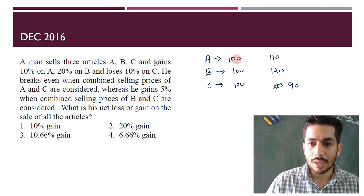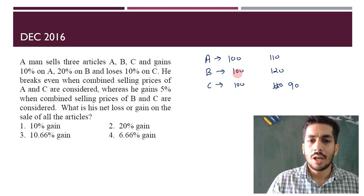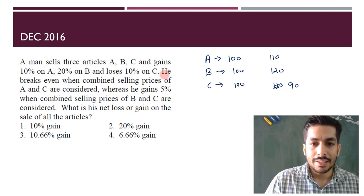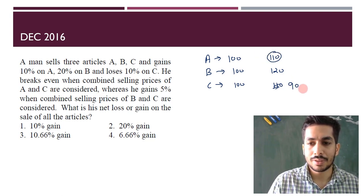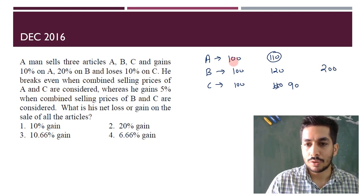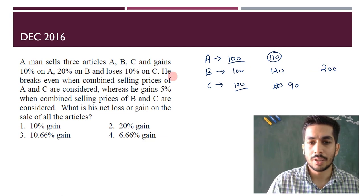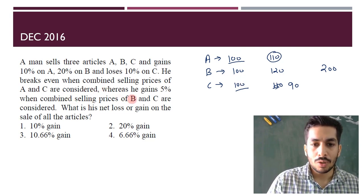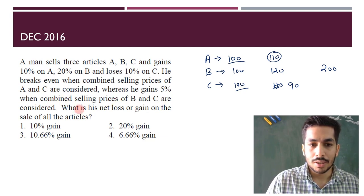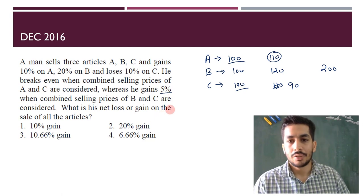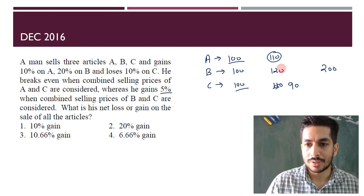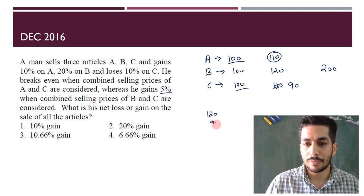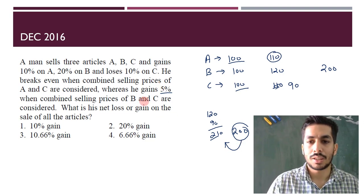Now how it becomes easy: the question says he breaks even when the combined selling prices of A and C are considered. Selling price of A is 110 and C is 90, so the total is 200. The cost price is also 200 (100 + 100), so this equation is satisfied. Then it says combining B and C gives a 5% profit. B's selling price is 120 and C is 90, so total is 210. 5% of 200 is 10, and 200 + 10 = 210, so this equation is also satisfied.